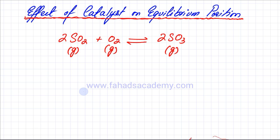If I add a catalyst now, the catalyst which is added in this reaction is V2O5. Let's say I add a catalyst - I'm just adding a catalyst, V2O5 catalyst.